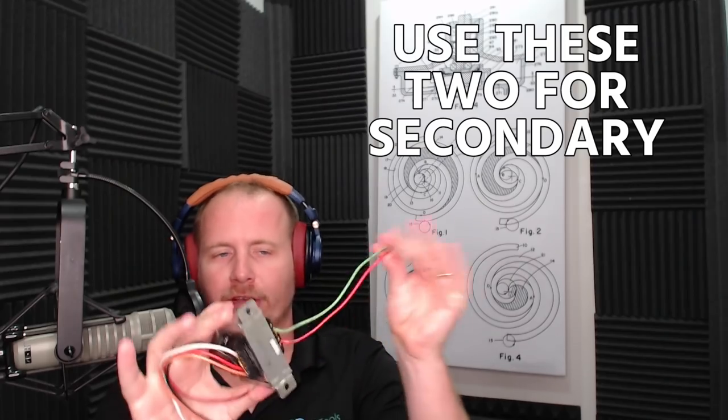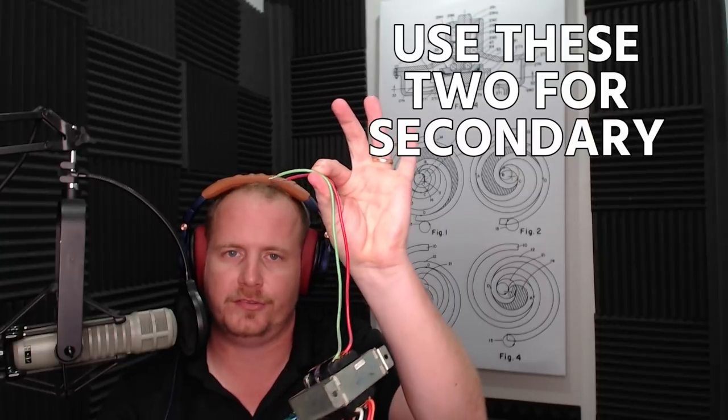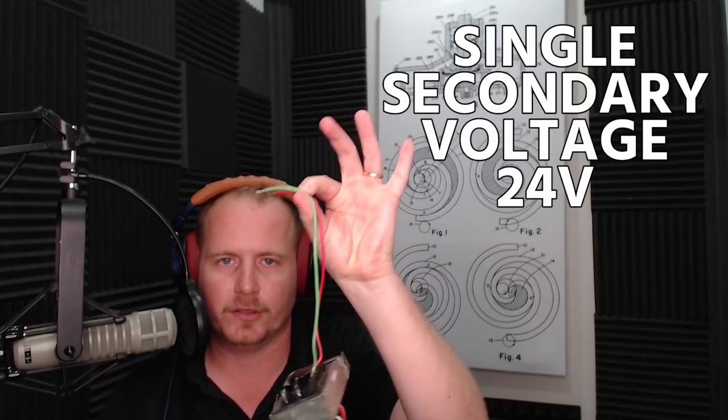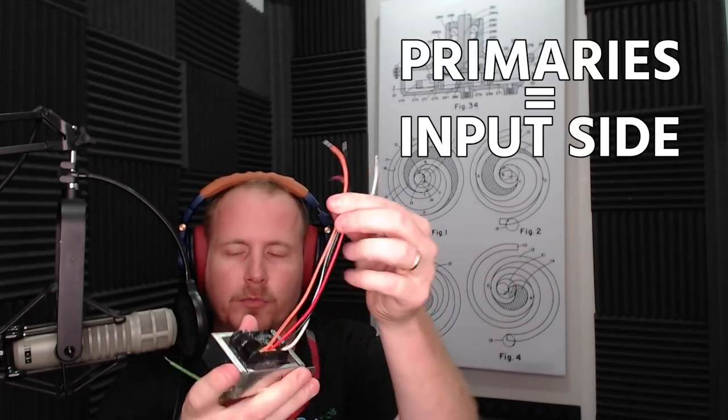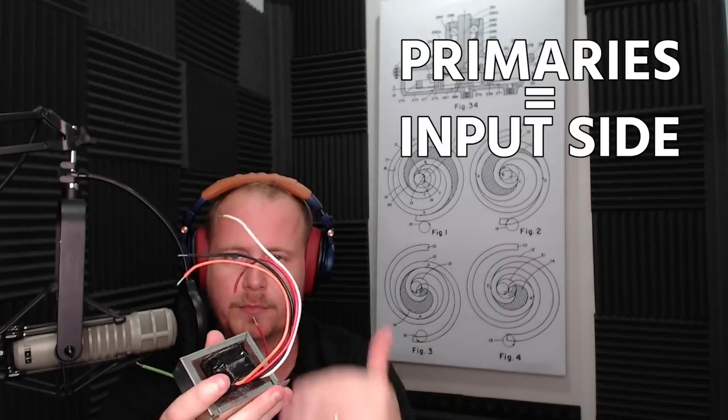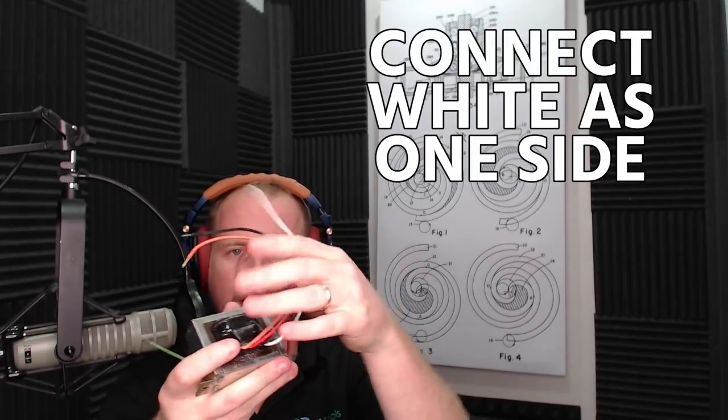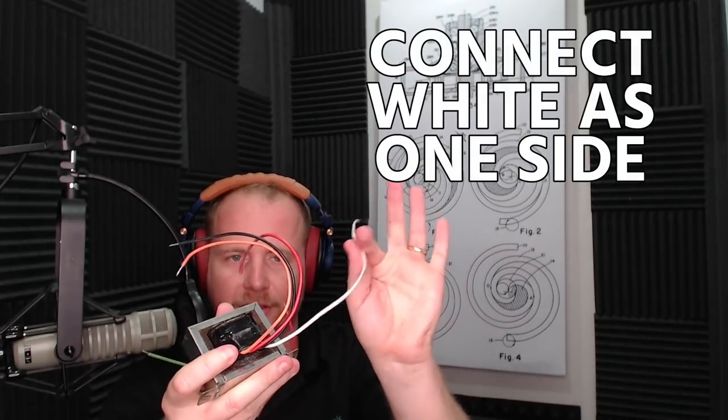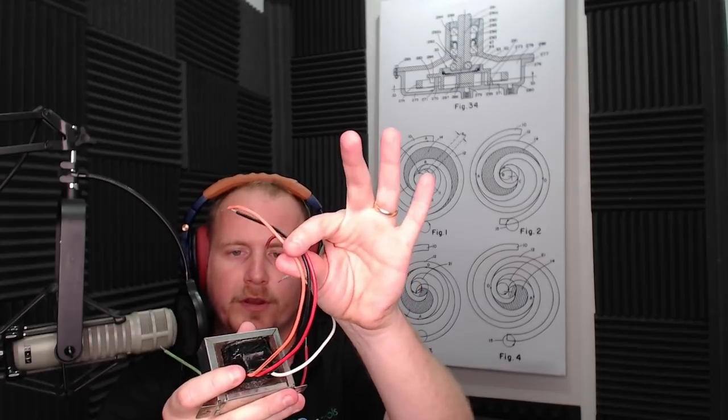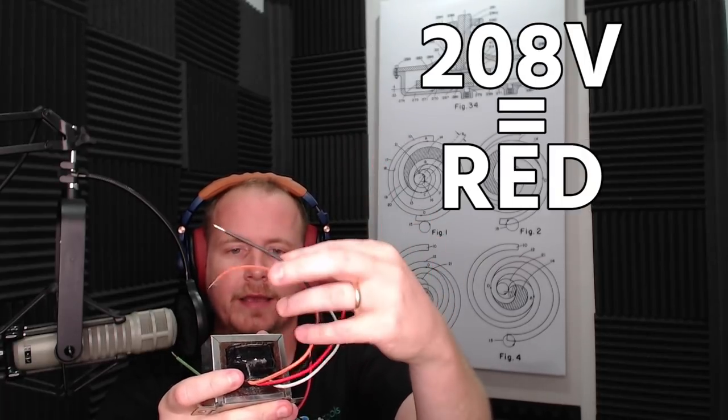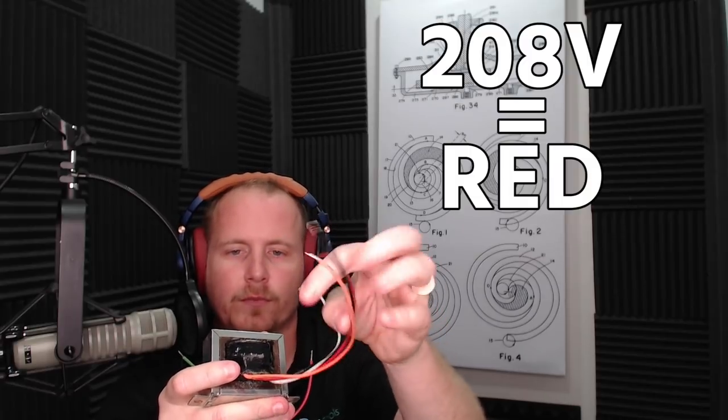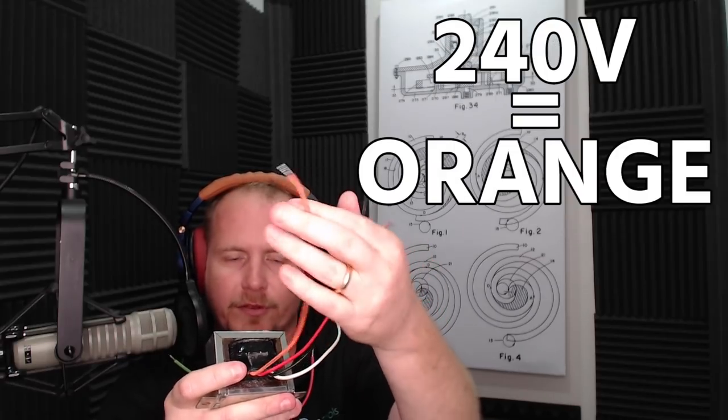So what that means is for your secondary, you're always going to use these two. This transformer is only good for a single secondary voltage, 24 volts. And then on your input side, your primary, that's the input side on a transformer. That's where you would connect your white as one side, and then you would choose one of these three colors, depending on if you're 120 volts, that would be your black. If you're 208 volts, that would be your red. And if you're 240 volts, that'd be your orange.